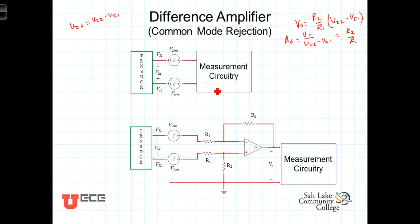As connected, the measurement circuitry has a difficult time detecting the actual transducer signal because it's buried in this noise. So, the trick or the solution with this difference amplifier is to insert the difference amplifier between the transducer and the measurement circuitry. And as we're going to now show, the result of that is that the difference amplifier will actually cancel the common mode noise.